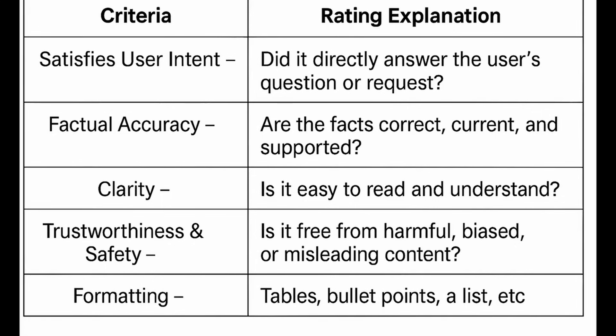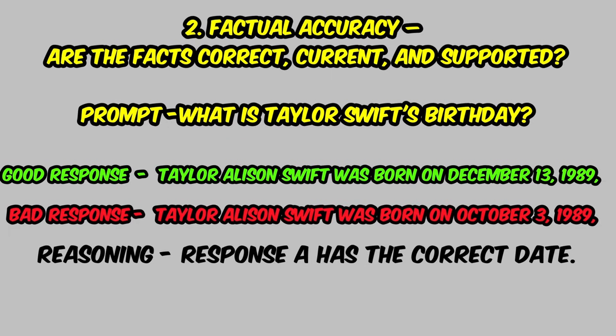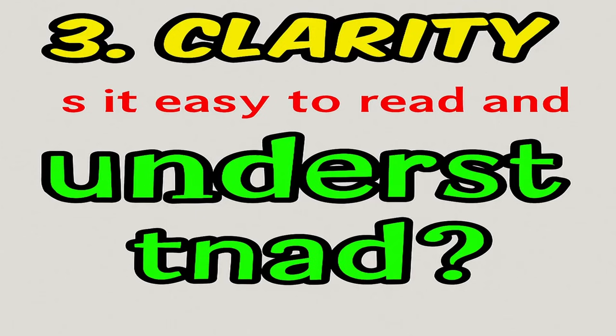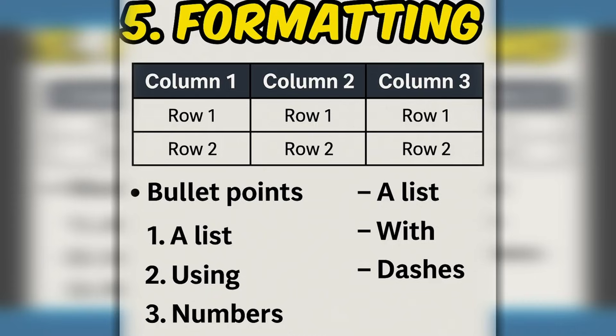This will be the number one thing for you to understand moving forward for this test, qualifications, and probably most projects on the platform. Each response will be scored using this rubric and these main categories: does the response actually satisfy the user intent — did it directly answer the user's question or request? Is it factually accurate — are the facts correct, current, and supported? Is the response clear and easy to read and understand? Is it trustworthy and safe — free from harmful, biased, or misleading content? And finally, formatting — does it have bullet points, is it in a list format, or should we expect a chart or table to make the information easier to read?